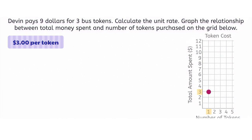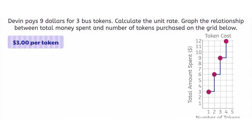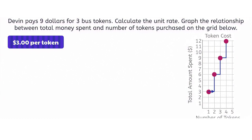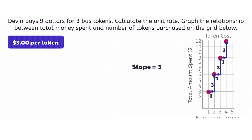One token is three dollars. Two tokens are six dollars. Three tokens are nine dollars. Four tokens are twelve dollars, and so on. Notice that the unit rate is actually telling us the slope of this graph. Recall that slope tells us how each change in the independent variable, number of bus tokens, will affect the change in the dependent variable, total cost. The slope is the same thing as the unit rate. Each time the number of bus tokens increases by one, the total cost increases by three. The slope is three over one, which is just equal to three.